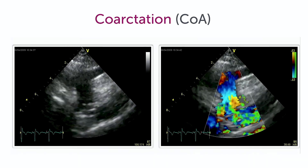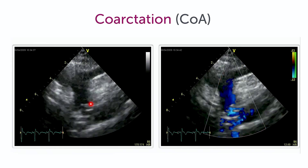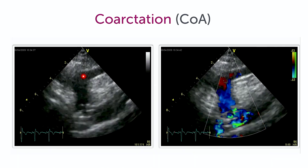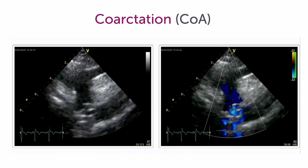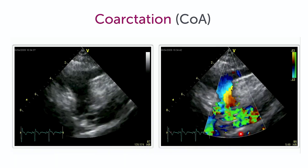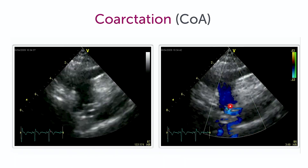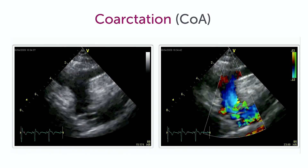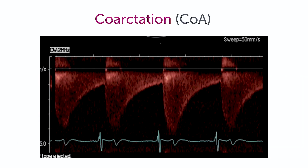How do you diagnose it? By using a supra-sternal view with display of the aortic arch and descending aorta. Using color you can localize where the defect is at the region of high turbulent flow, then you can use continuous wave Doppler as well to look at the degree of obstruction.